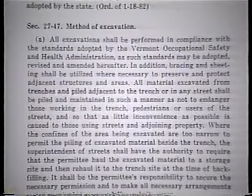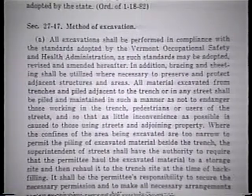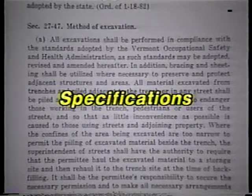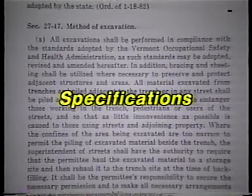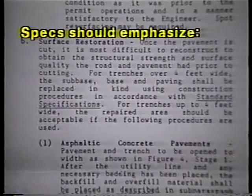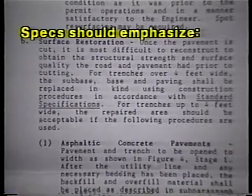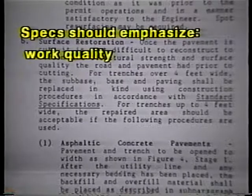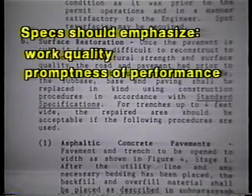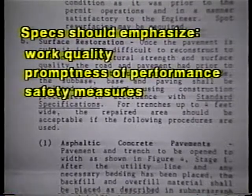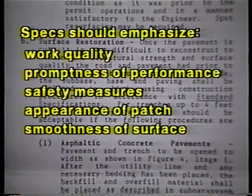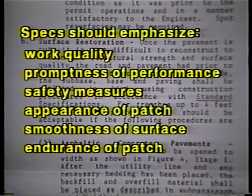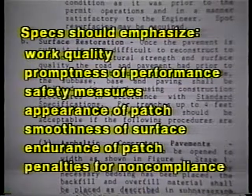Finally, another way of ensuring that utilities make utility cuts properly is through specifications — ones that guide both the utility's work and the agency's inspection of it. In particular, the specifications should emphasize work quality, promptness of performance, safety measures for workers, motorists, and pedestrians, the appearance of the completed patch, the smoothness of the patch surface, the endurance of the patch, and penalties for non-compliance.